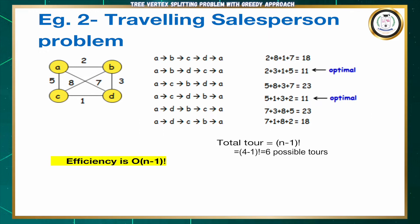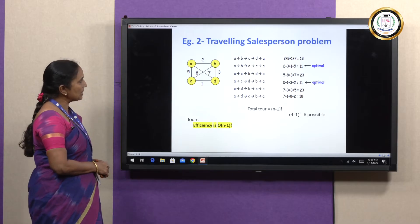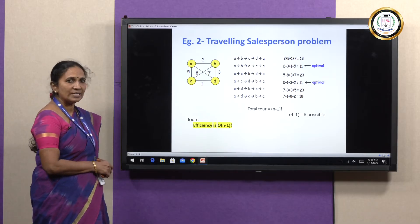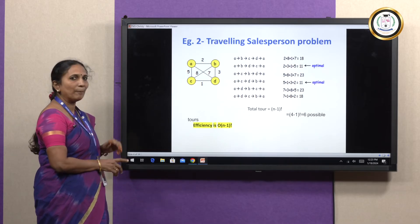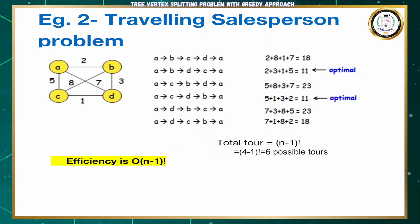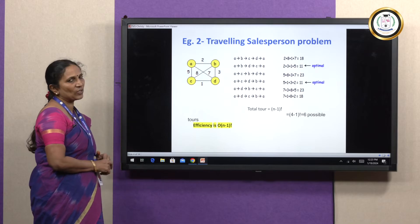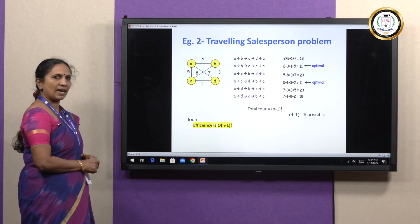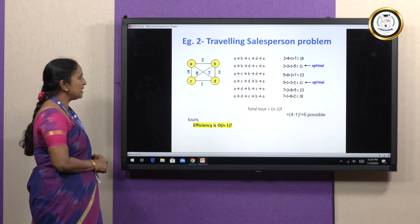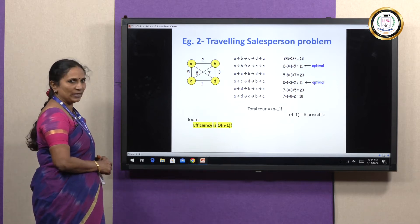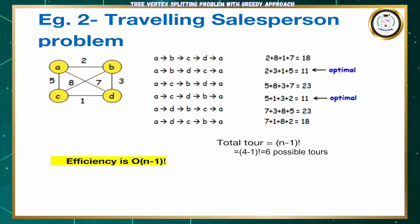We will see one more example. This is a traveling salesperson problem where we are given four cities. We need to start from city A, visit all the cities once, and finally come back to the starting point. The constraint is we are visiting all the cities once and coming back to the starting point. We are getting six various feasible solutions. That is: start from city A, go to city B, city C, D, and back to A; or from A, go to B, D, C, and back to A; or from A, directly to C, then B, D, and A.